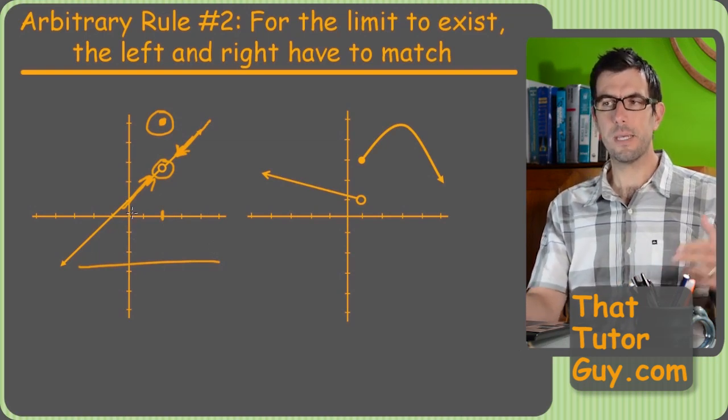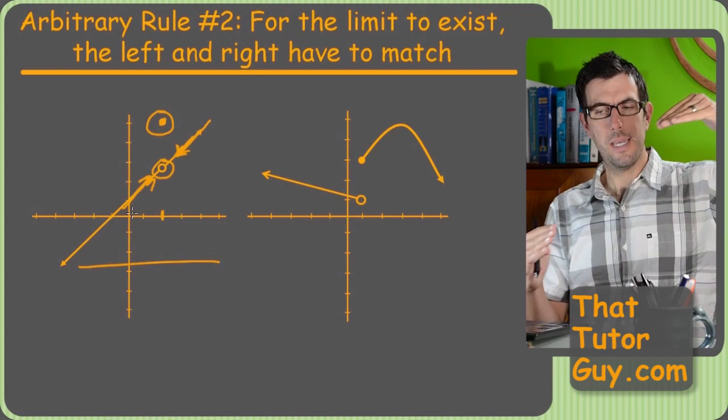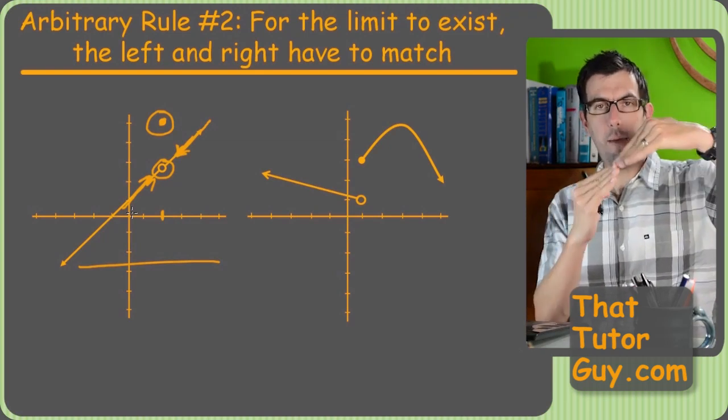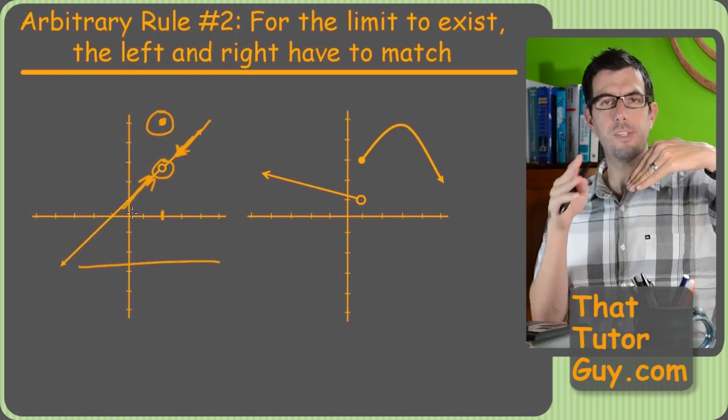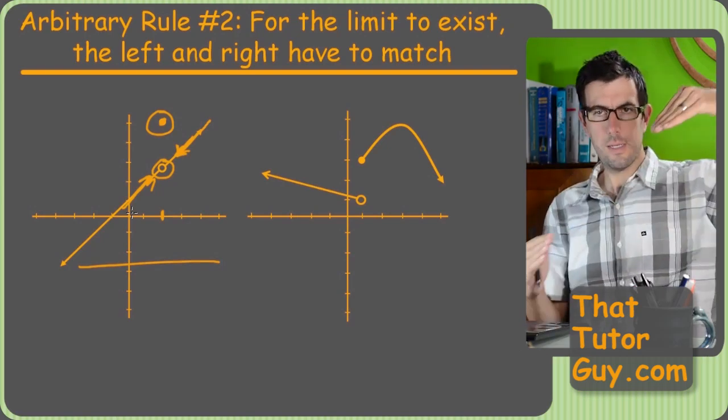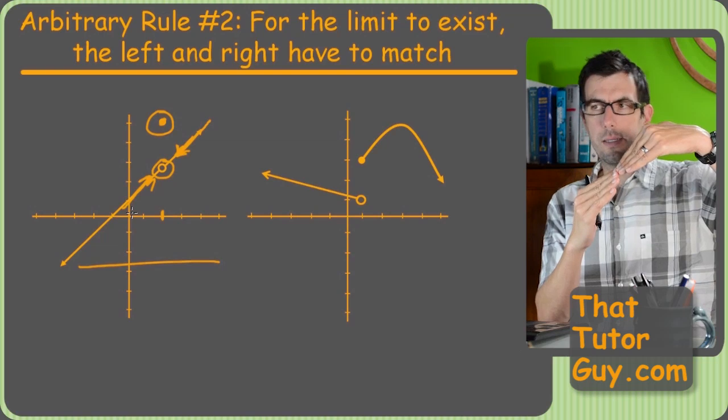You'd be like, yeah, it does because if you're riding along f of x, it looks like you're going to have a head-on collision. They meet up really nicely. So that limit does exist whether or not there's that other dot somewhere else. The point is that coming from the two sides, the limit exists because they line up.